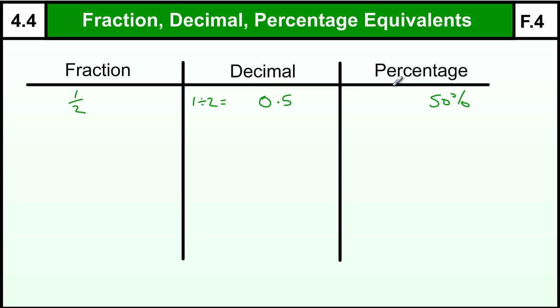To get from a half to a percentage, we could make that out of 100. So a half changed into hundredths would be 50 out of 100, or 50%. Or we could just take our decimal, 0.5, and multiply that by 100 to get 50.